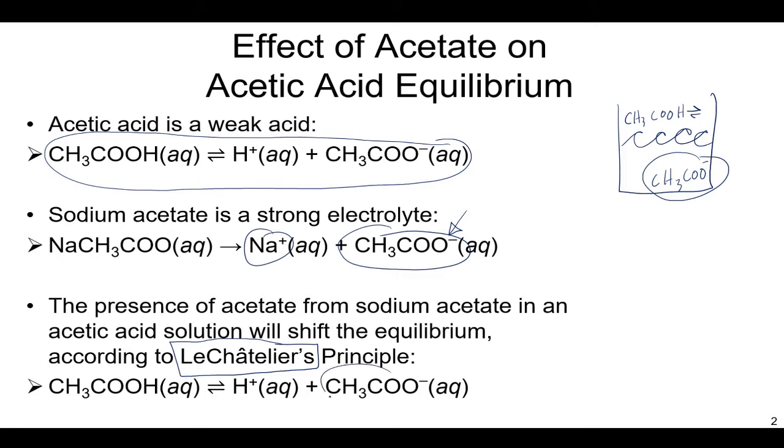We remember this from previous lectures that Le Chatelier's principle says in an equilibrium, what if I add a bunch more product? Well, the reaction responds by shifting back to the left. And so the amount that this acid dissociates or moves to the right is going to be lessened if we already have this acetate ion around. And so this is called the common ion effect.